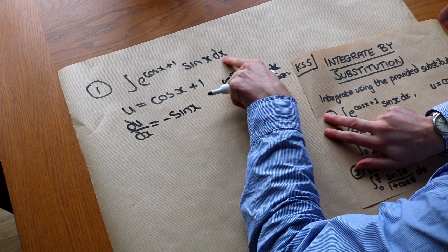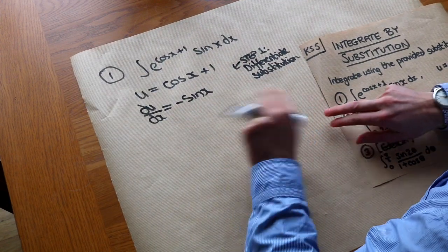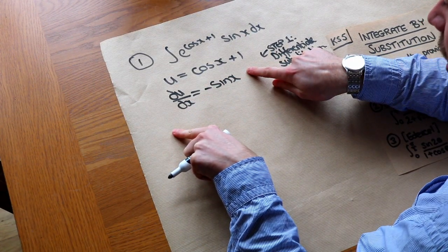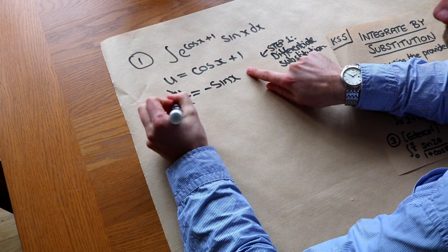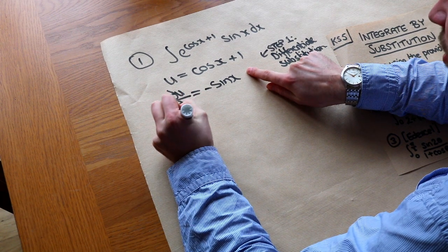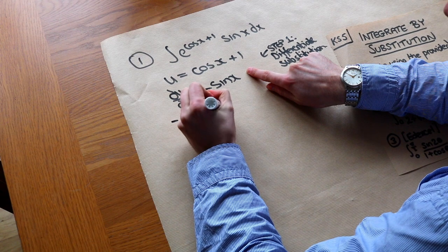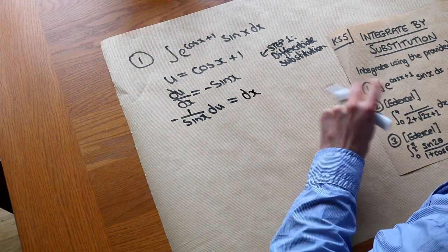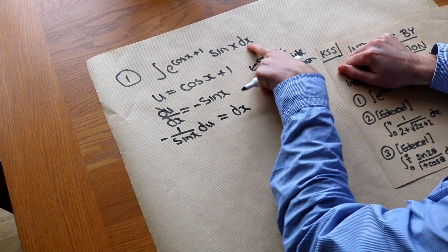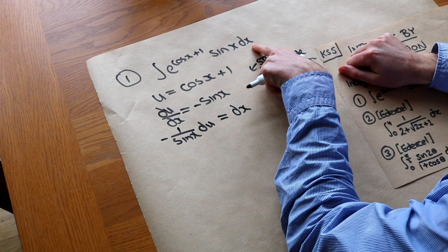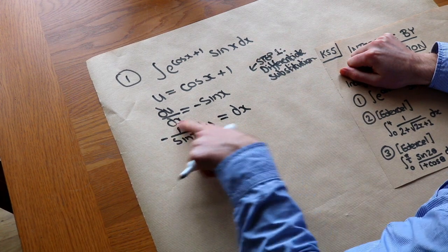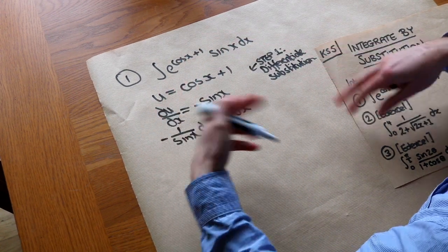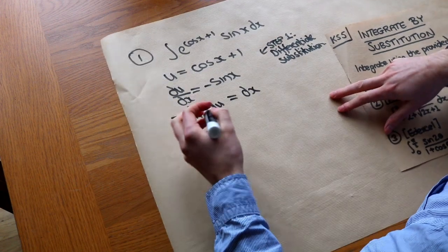We want to replace dx, so we make dx the subject. We can treat this as an ordinary fraction: multiply by dx, then divide by minus sin x. So we get dx equals minus 1 over sin x times du. This expression still has an x in it, but we hope that when we substitute it in, it will cancel with a sin x somewhere and leave everything in terms of u.